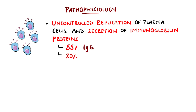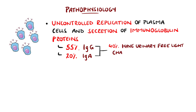Of the cases producing these two immunoglobulins, 40% will also have free monoclonal light chains in the urine, called Bence-Jones protein.